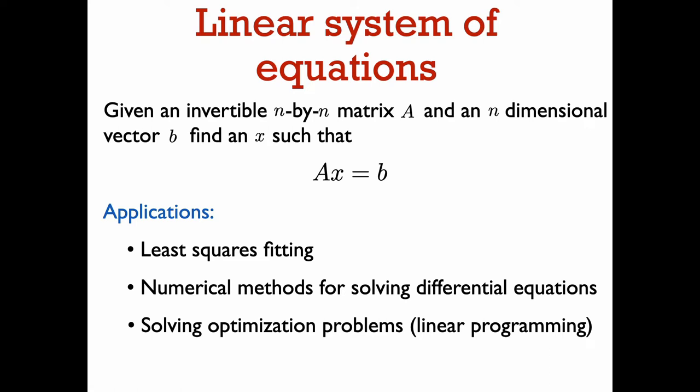Let us say we are given an n-by-n matrix A, which is invertible, and an n-dimensional vector B — I will usually refer to B as the right-hand side. The goal is to find an n-dimensional vector x such that A times x is equal to B. In this situation, where A is invertible, such an x always exists and is unique; in fact it is just A inverse times B.